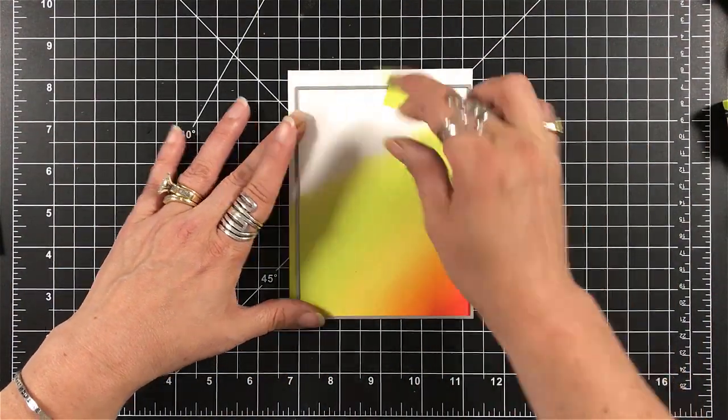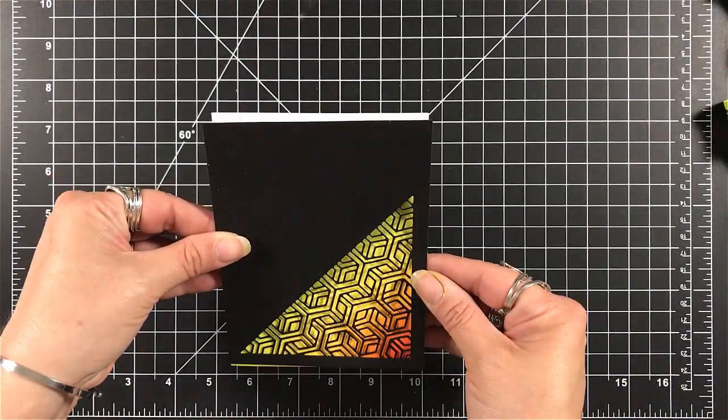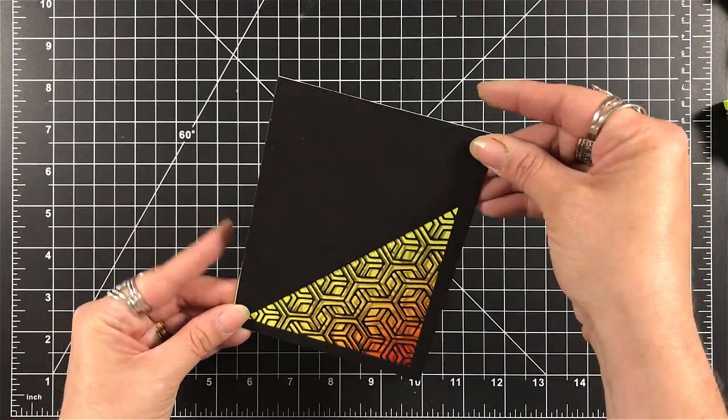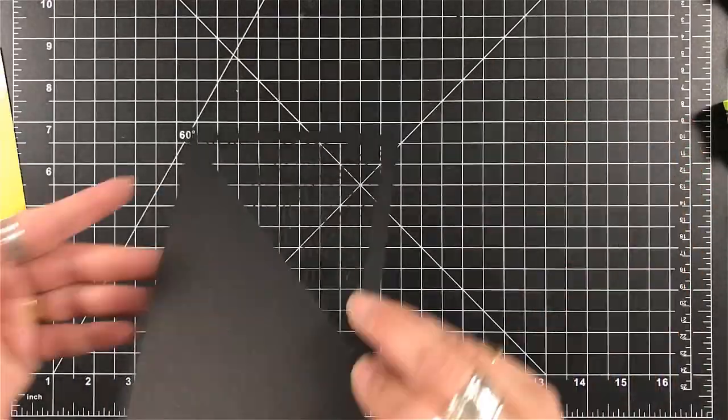So I'm just taking the panel that I die cut and placing it on top. I wanted to make sure I had the whole area covered that I wanted. And I just used a rectangle die, no stitch, no nothing, that I have so that it would match my black cardstock.